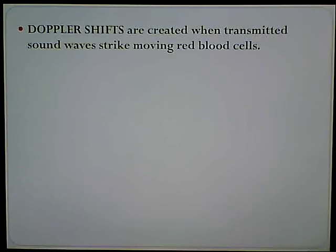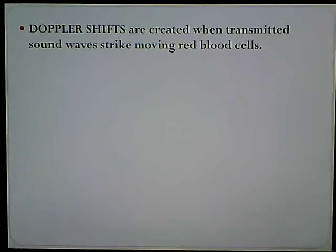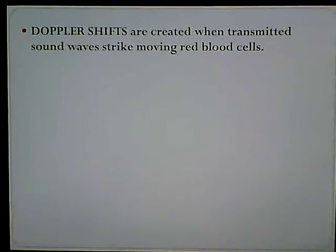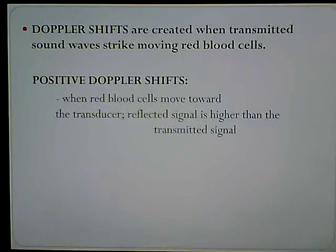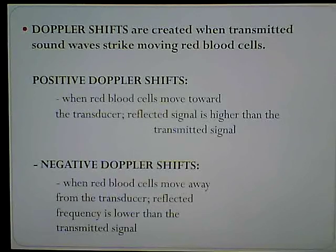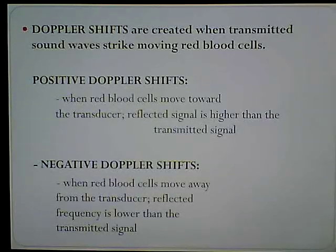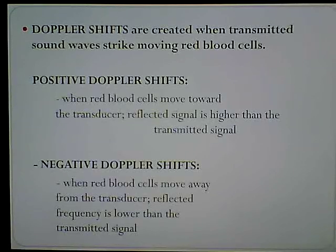Doppler shifts are created when transmitted sound waves strike moving red blood cells. Positive Doppler shifts occur when red blood cells move towards the transducer — the reflected signal is higher than the transmitted signal. Negative Doppler shifts occur when red blood cells move away from the transducer — the reflected frequency is lower than the transmitted signal. And this is exactly the way you're going to answer these questions, whether it's my test or the registry.